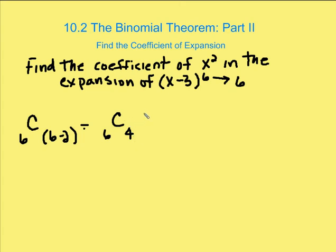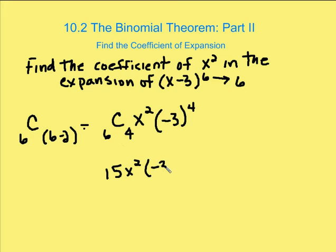That's the first part of our coefficient. The second part is we take the x value — we already know it's x squared because we want the coefficient of x squared, so we simply put x squared in the next spot. Finally, we take our b value, which is negative three, and raise it to the n value minus the exponent for the a value, which is two, giving us four. So negative three to the fourth is: negative three times negative three is nine, times negative three is negative 27, times negative three again is 81.